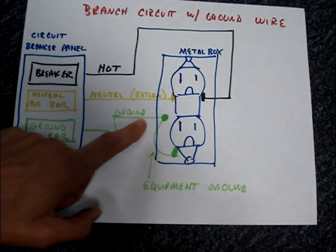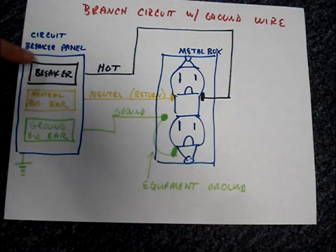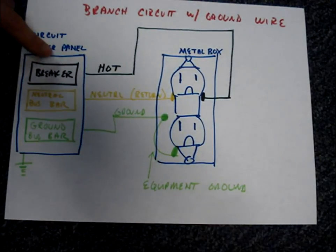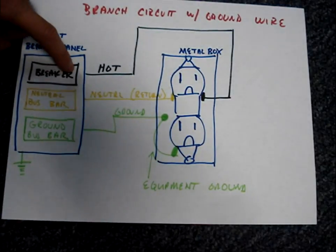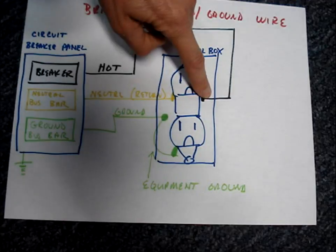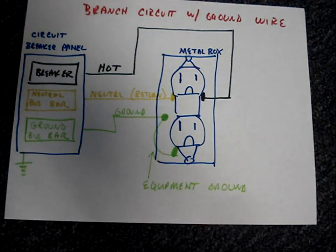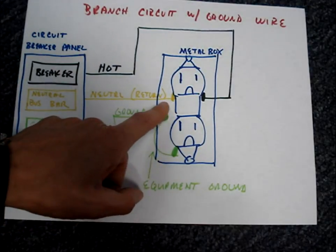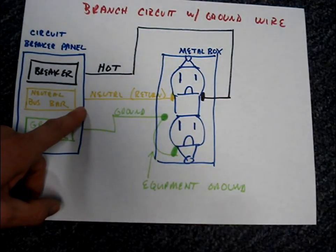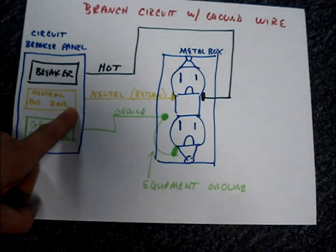If we were to plug something into our outlet, then from the breaker, current would flow from the hot wire to the outlet through whatever we plugged in and it would return on the neutral wire back to our circuit breaker panel.